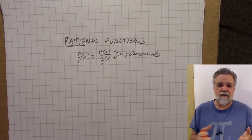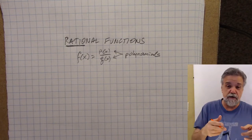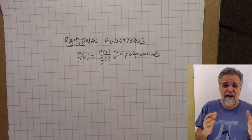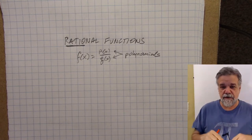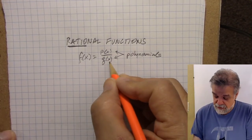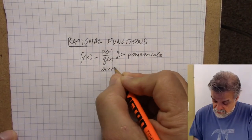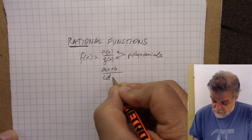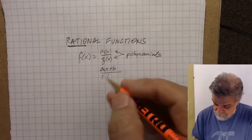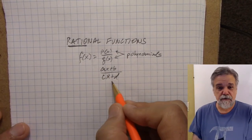So f(x), if it's a rational function, is going to be p(x) divided by q(x), where p and q are both polynomials. Now you might be thinking, there are all sorts of polynomials — first degree, second degree, also known as linear and quadratic functions, and then 10th degree, 20th degree. This could get really complicated. We're not going to get complicated in this video. We're going to have both p(x) and q(x) just be linear functions, something like ax plus b divided by cx plus d.